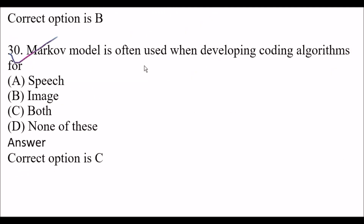Next question: The Markov model is often used when developing coding algorithms for — Option A: speech. Option B: image. Option C: both. Option D: none of these. The right answer is option C, both. The Markov model is often used when developing coding algorithms for both speech and image.